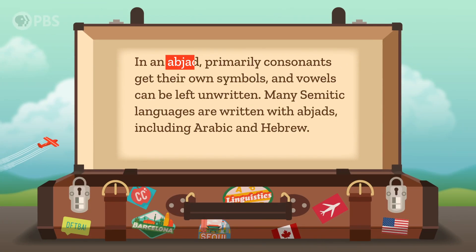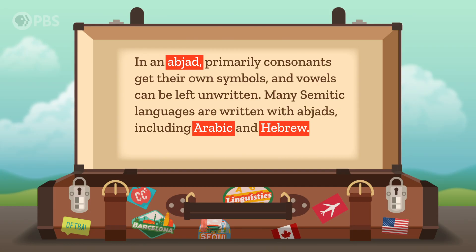In an abjad, primarily consonants get their own symbols and vowels can be left unwritten. Many Semitic languages are written with abjads, including Arabic and Hebrew.